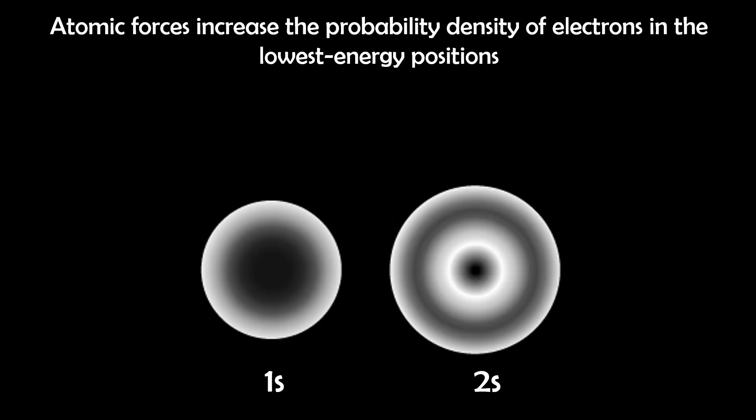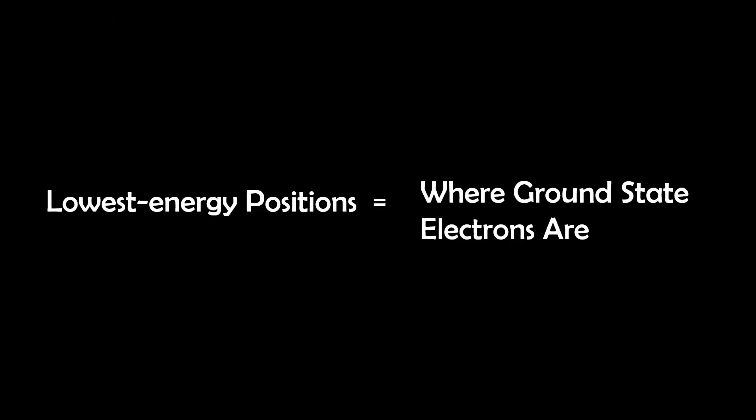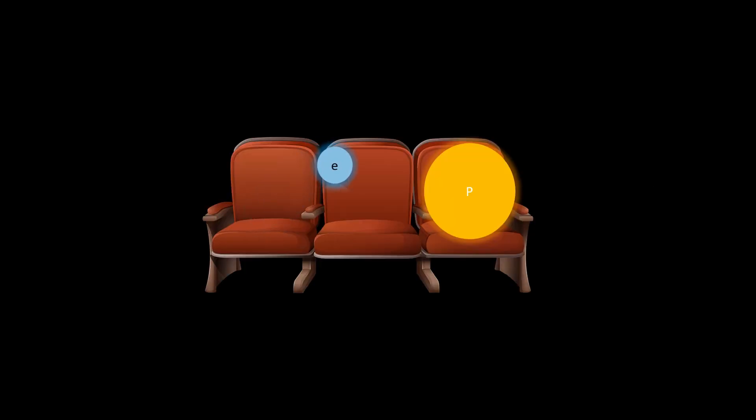However, a more precise description would be that atomic forces increase the probability density of electrons in these low energy positions or lowest energy orbitals. These stable electron arrangements are what we term the ground state, sort of like electrons finding the best seat in a room, often nearest to the nucleus.